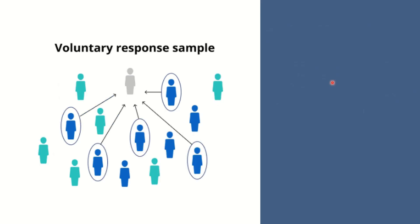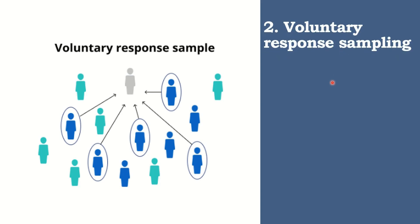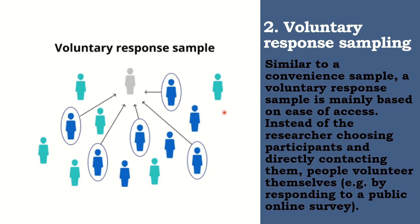The next type of non-probability sampling is called voluntary response sampling. When you say voluntary response sampling, it is similar to a convenient sample. A voluntary response sample is mainly based on ease of access. Instead of the researcher choosing participants and directly contacting them, people volunteer themselves. Hindi na yung researcher yung mamimili. There will be volunteers to answer that survey.